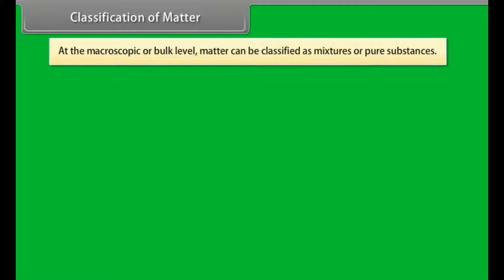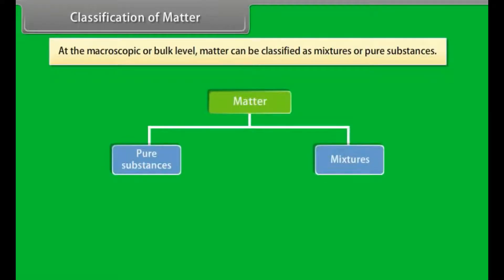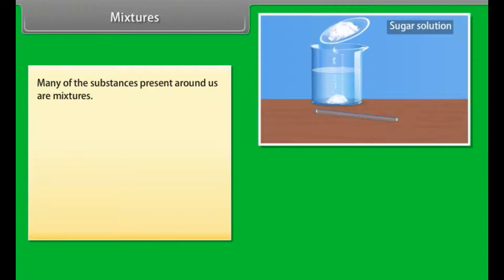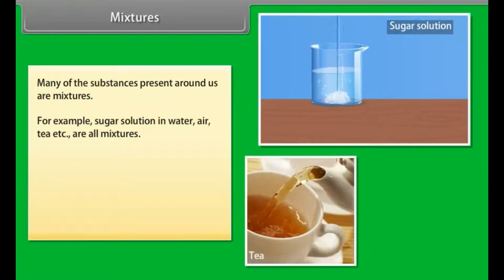Classification of Matter: At the macroscopic or bulk level, matter can be classified as mixtures or pure substances. Many of the substances present around us are mixtures. For example, sugar solution in water, air, tea, etc., are all mixtures.